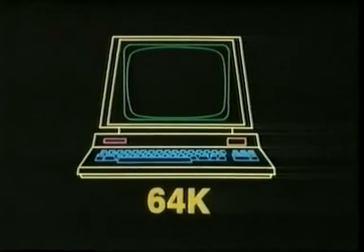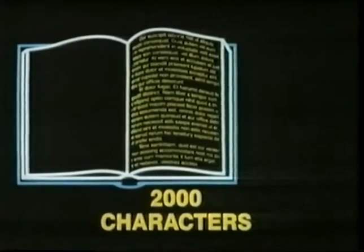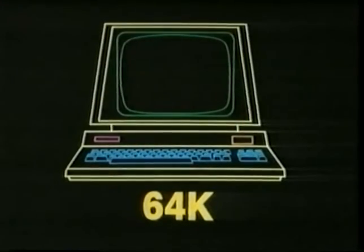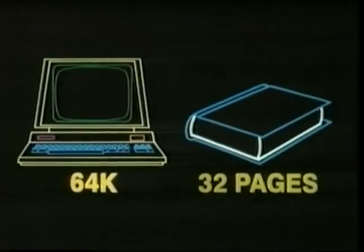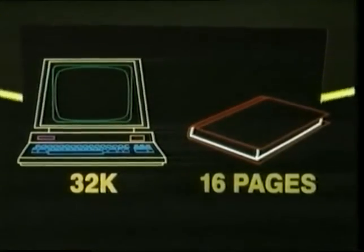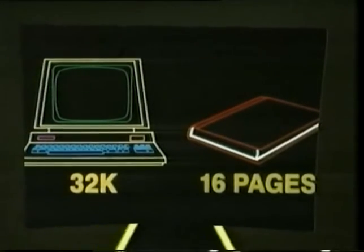This may sound a lot, but it isn't. The average page of a book contains about 2,000 characters — it's a 2K page. So even a 64K computer can only store as many characters as a 32-page book, and a 32K computer only as many as a 16-page book. Although, of course, a computer can do a lot more with its characters than a book can. But that's another story.